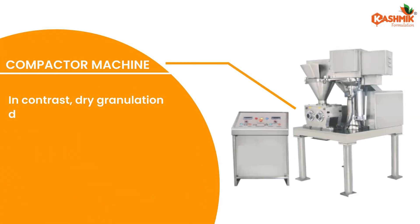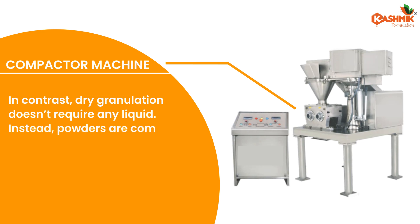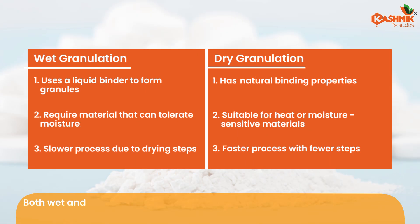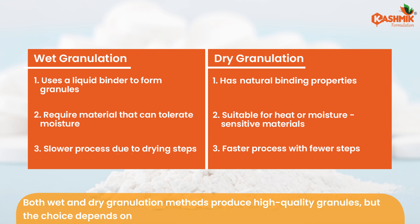In contrast, dry granulation doesn't require any liquid. Instead, powders are compacted under high pressure to form slugs or ribbons, which are then milled into uniform granules. Both wet and dry granulation methods produce high-quality granules, but the choice depends on the formulation's specific properties.